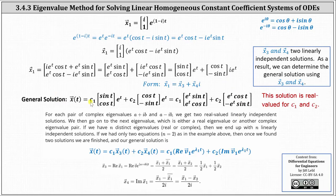Therefore, our general solution is X of T equals C₁ times the vector [sine T, cosine T] times e to the T, plus C₂ times the vector [cosine T, negative sine T] times e to the T. Using this method, for each pair of complex eigenvalues A plus iB and A minus iB, we get two real-valued linearly independent solutions. We then go on to the next eigenvalue, which is either a real eigenvalue or another complex eigenvalue pair. If we have n distinct eigenvalues, real or complex, then we end up with n linearly independent solutions. If we had only two equations — meaning n equals 2, as in this example — then once we found the two solutions, we are finished and we have the general solution.